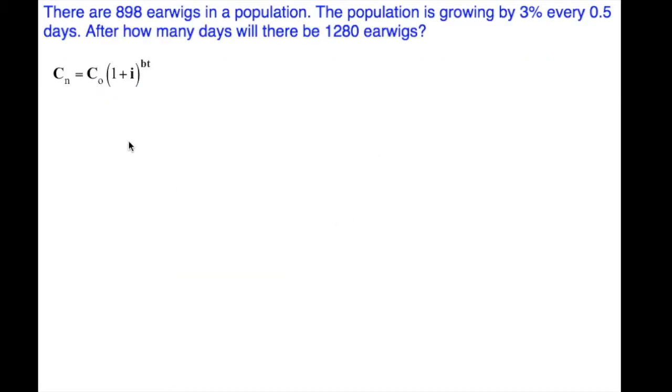Our growth formula, c sub n is equal to c sub 0 times 1 plus our growth rate i, to the power of bt. b is the number of cycles per day. t is the number of days in this case.